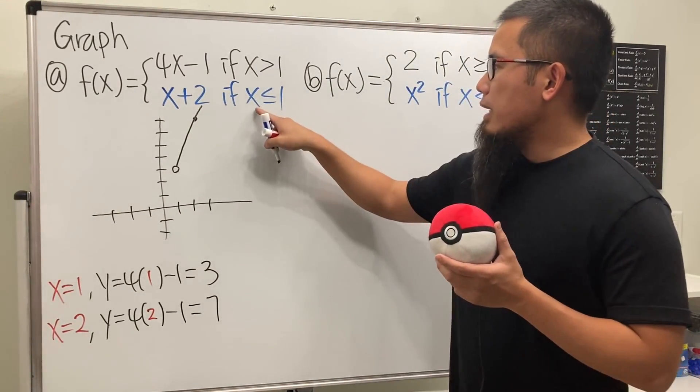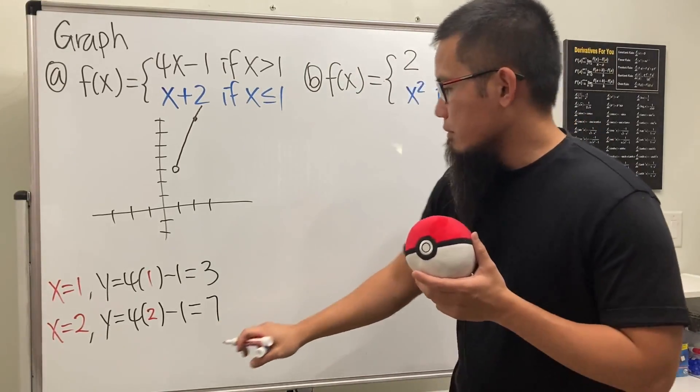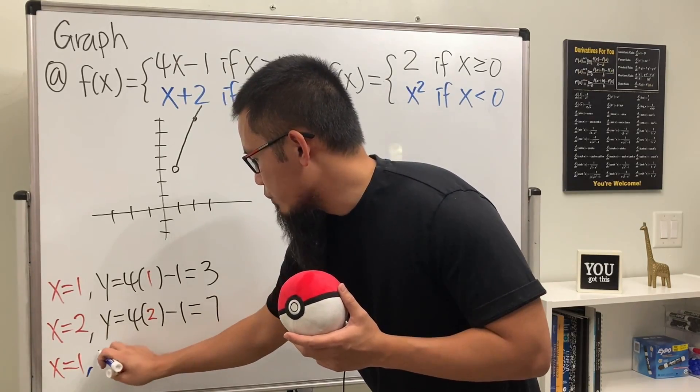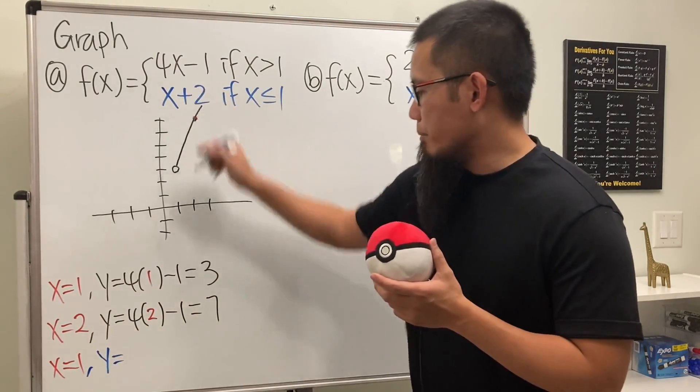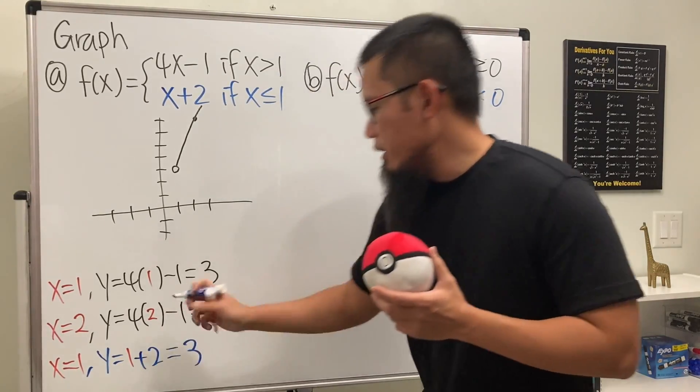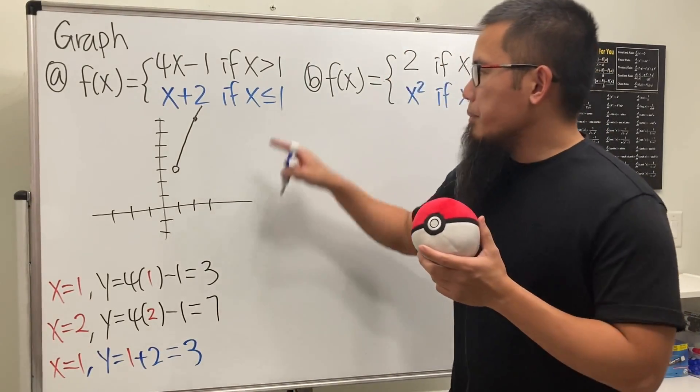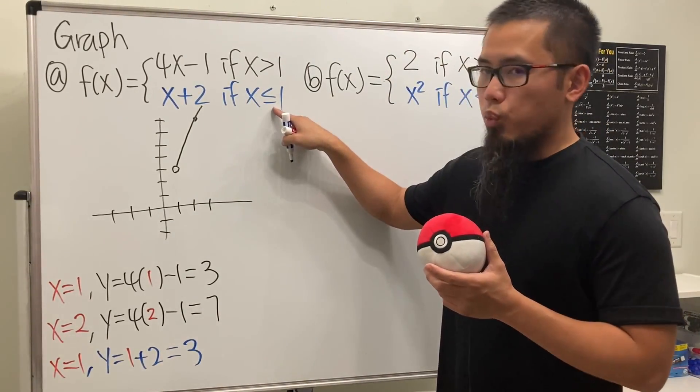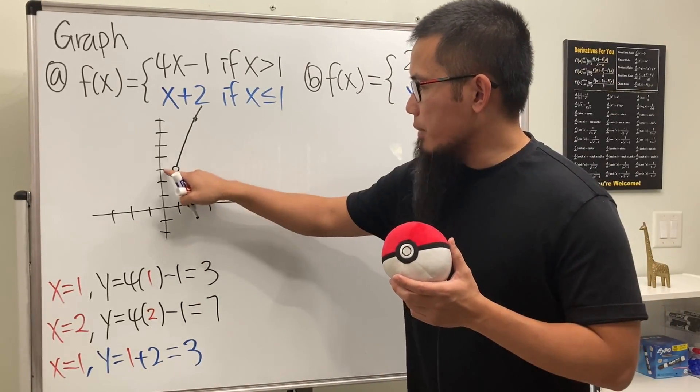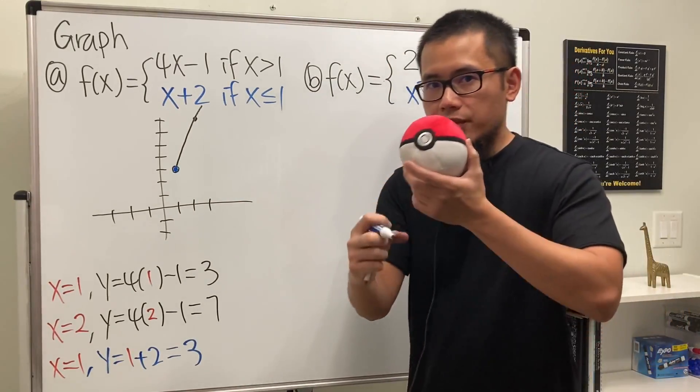Well, for this, that's when x is less than or equal to 1, so we will still have to plug in. When x is equal to 1, this is going to give us y that's equal to 1 plus 2. Hey, this is also equal to 3. That's very nice. So here, because this is x is equal to 1, and we also have 3, we go to 1, 3, and fill in the circle, just because they kind of match.